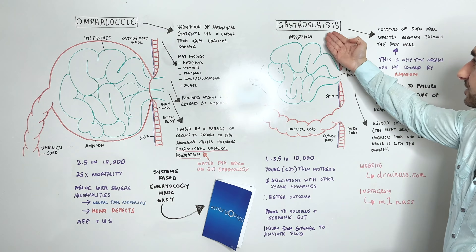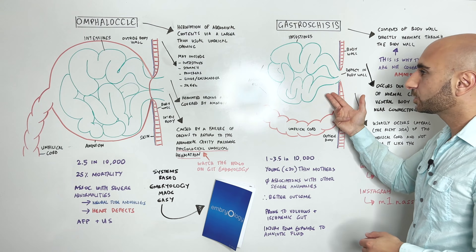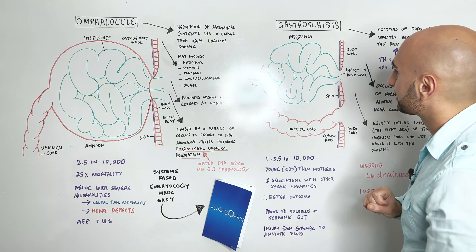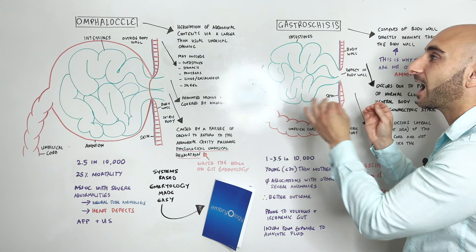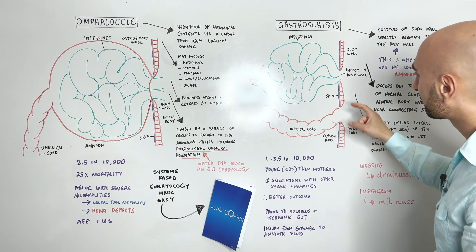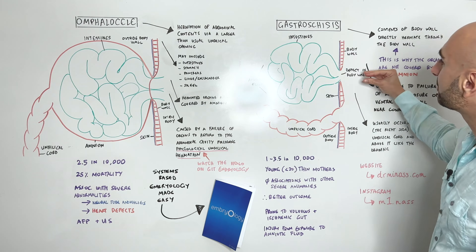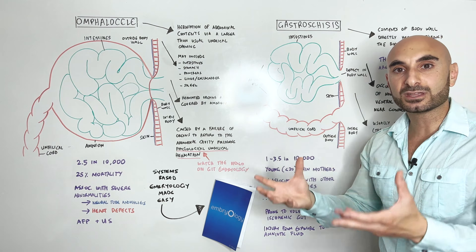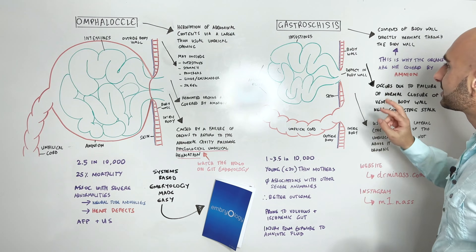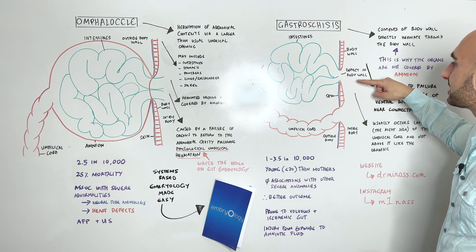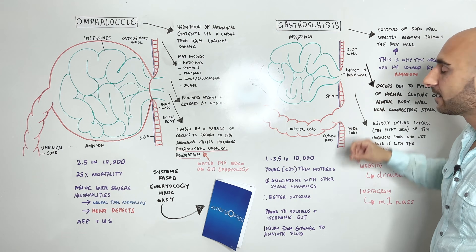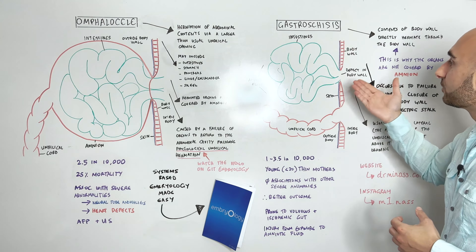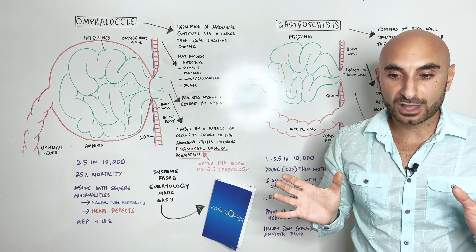Moving on now to gastroschisis. Paying attention to this picture — it's essentially the exact same cross-section. Notice the differences between an omphalocele and gastroschisis. First, notice how whatever has herniated out of the abdominal cavity is not surrounded by amnion — it is lying within the amniotic fluid. Second, it is not herniated through the umbilicus. It has herniated through a defect in the body wall, and thus the etiology isn't due to physiological herniation like in omphalocele.